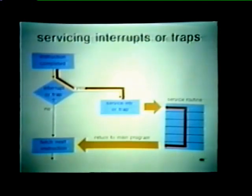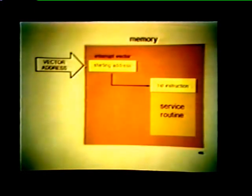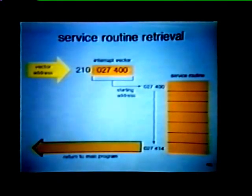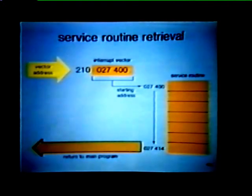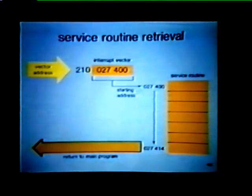Let's see how the service routine is retrieved from memory. When a device interrupts the processor, it supplies the CPU with the address of an interrupt vector. The interrupt vector contains the starting address of the service routine. The processor first retrieves the starting address from memory, which then directs it to the first instruction in the service routine. In this example, the interrupt vector is stored in memory location 210. The contents of memory location 210 is 027400, which is the starting address of the service routine. The last instruction in the service routine is stored in location 027414, and it returns the processor to the main program.